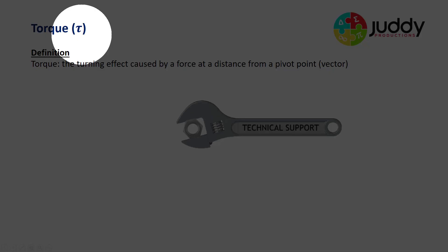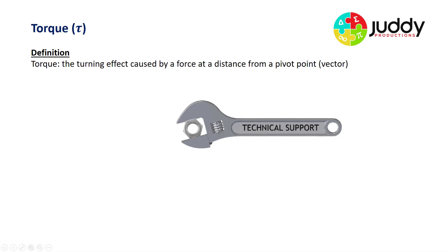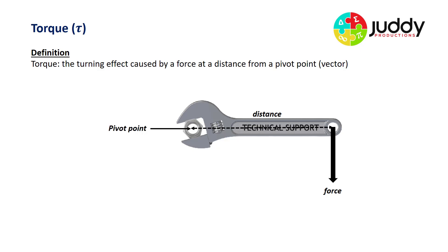Let's start with torque. It has the symbol tau from the Greek alphabet, and by definition torque is the turning effect caused by a force at a distance from a pivot point — and it is a vector. To create a torque you need a force being applied. If we imagine a shifting spanner and we're applying a force downwards, it operates at a distance from the pivot point, which is where the nut exists. The force is not applied on the nut itself, but at some distance along the handle. Once we've got a pivot point and a force applied at a distance, we get a torque or a turning effect.